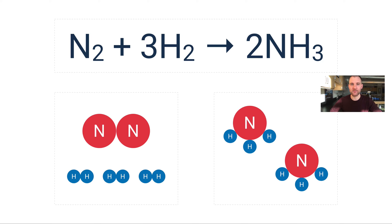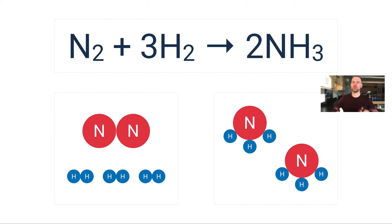Here's another way to look at this: if I reacted three molecules of H₂, I could make two molecules of NH₃. What if I reacted nine molecules of H₂? I could make up to six molecules of NH₃. It's just like adjusting the quantities in a recipe.